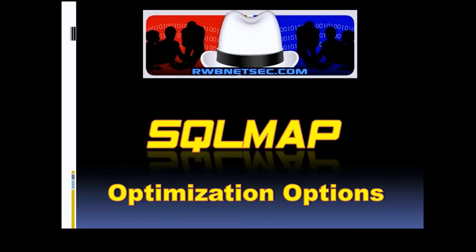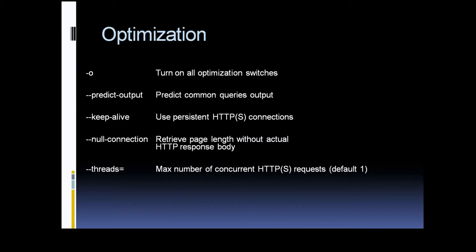So I'm just going to start off by showing the list of optimization options that we do have, and like I said there's not many options under this category. We'll actually be going through these pretty quickly — at least a lot shorter than most of the other videos that I do. So you can see we start out here with the TACO, we've got predict output, keep alive, null connection, and threads.